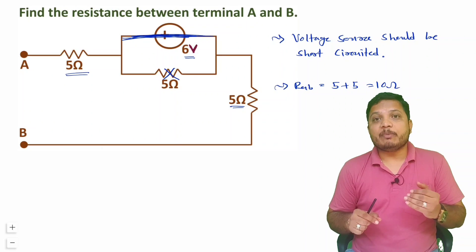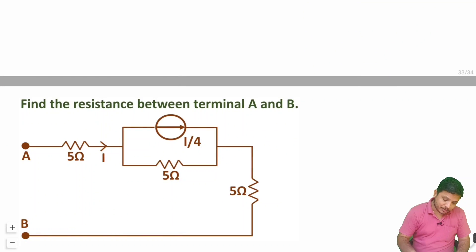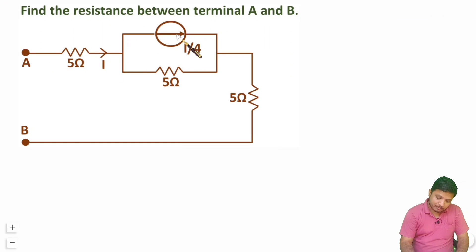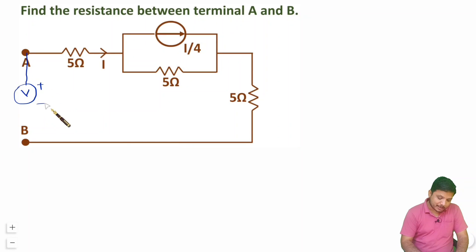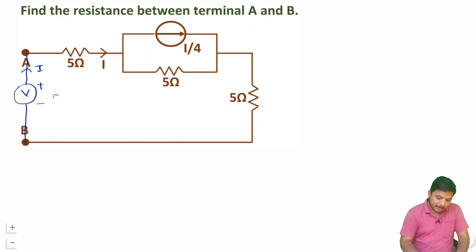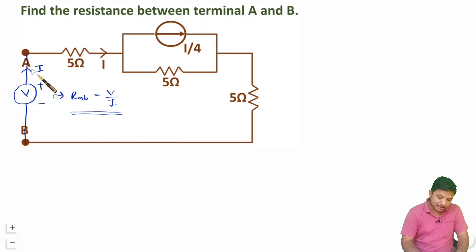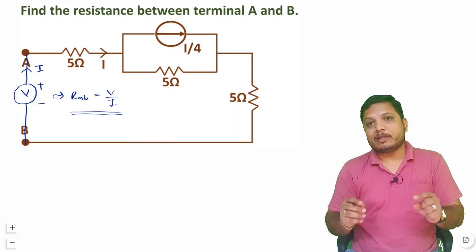Now for the third example based on a dependent source: the circuit has a dependent current source with value I/4, where I is the current flowing elsewhere in the circuit. Whenever a dependent source is present, you connect a battery at the terminal — say with voltage V and current I flowing in. The equivalent resistance RAB equals V divided by I. This is the basic process: connect a battery at the load terminal, then find V divided by the current generated by that battery.